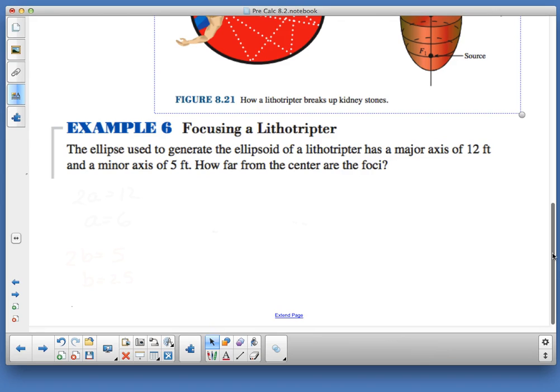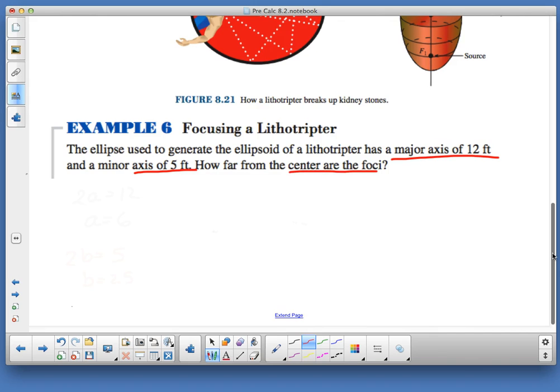And they figure that out with an ultrasound. And they kind of position the person in there. And then they can increase it or decrease it as strong as they need. And with the ultrasound, they can tell whether they busted up the stones or not. So they don't have to go in to take off the stones if they're that big. But it's kind of a neat application of this because what they do, they have the shock waves come in and the person's kidney is located at the other focus. And they just treat that as kind of a big old jackhammer with the ultrasonic waves as you go through. So focusing a lithotriptor, the ellipse used to generate the ellipsoid of a lithotripper has a major axis of 12 feet. Major axis of 12 and a minor axis of 5. How far from the center are the foci?